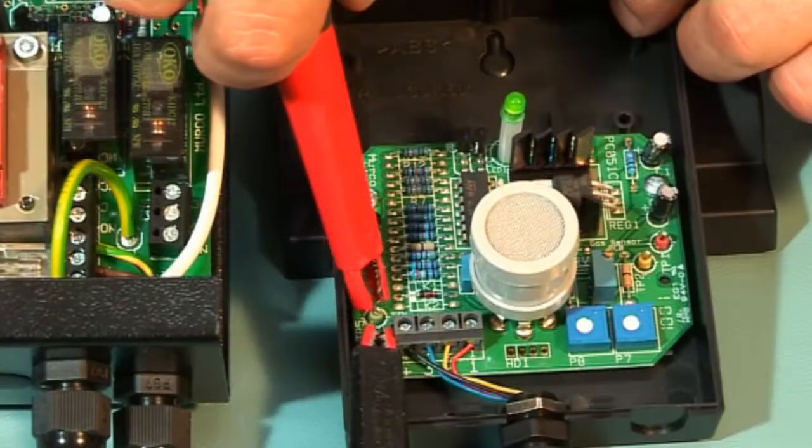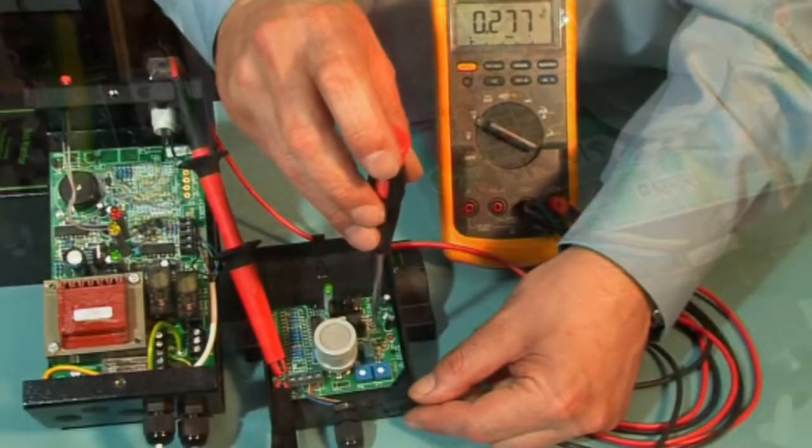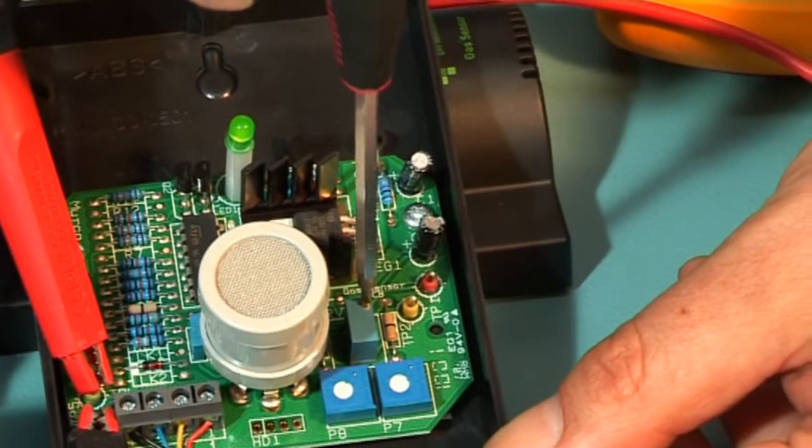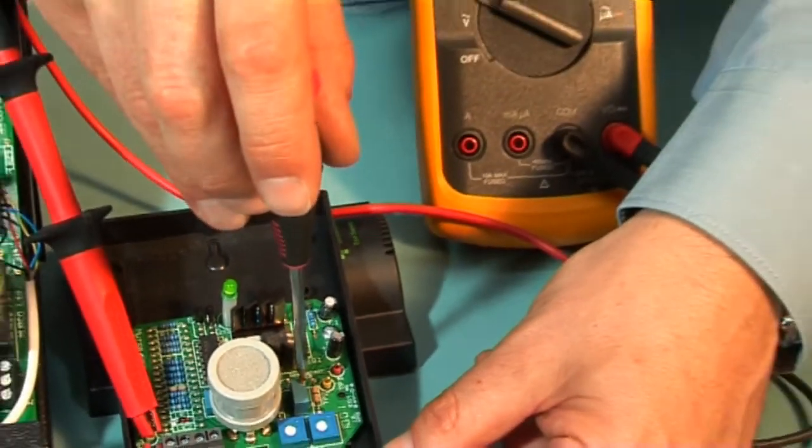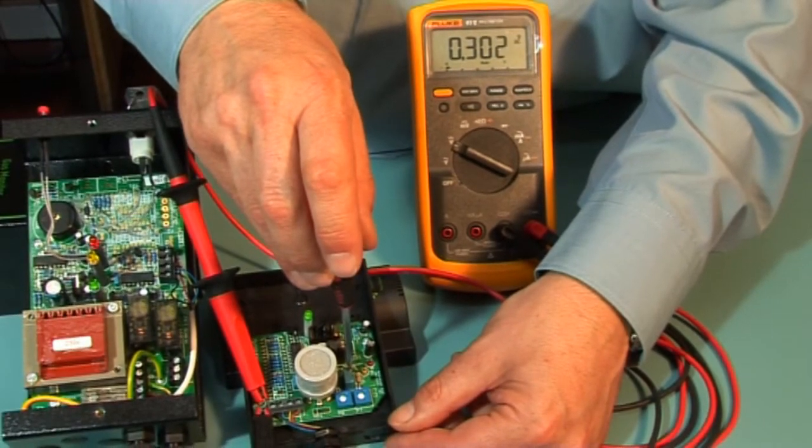With your voltmeter between TP5 and TP4, check and record the voltage. If different from the label factory voltage, then adjust RV1 to the standby voltage, normally 0.3 volts or as on the rating label.